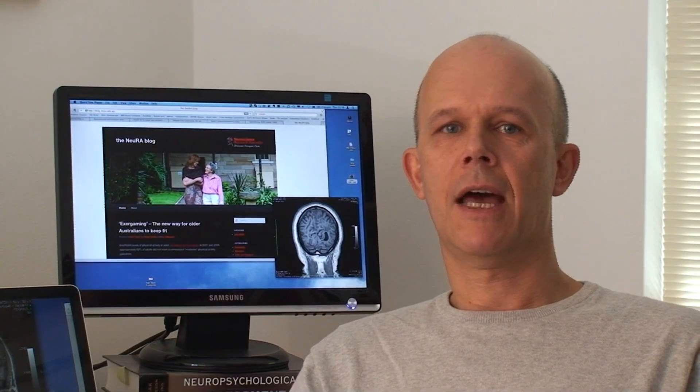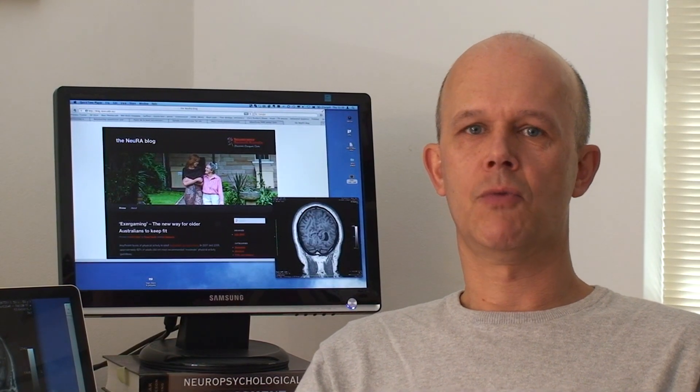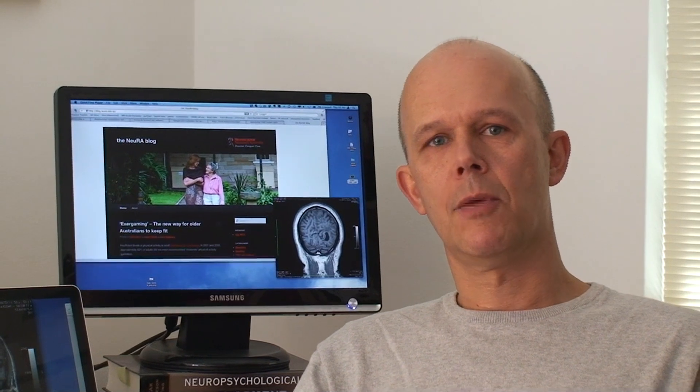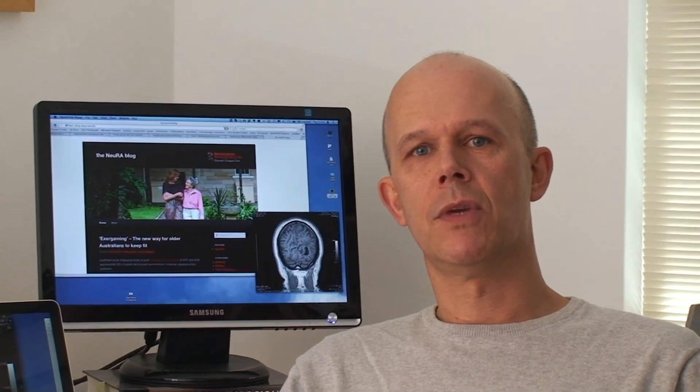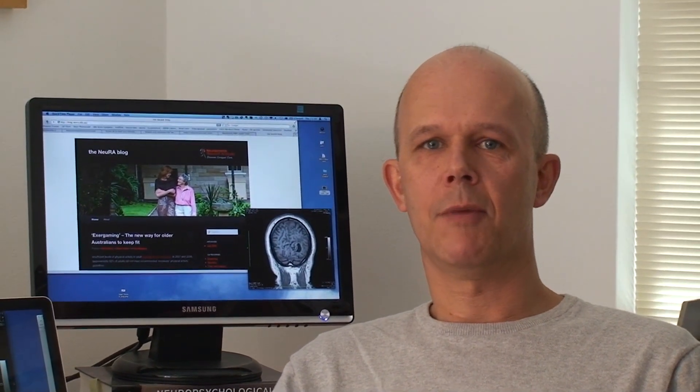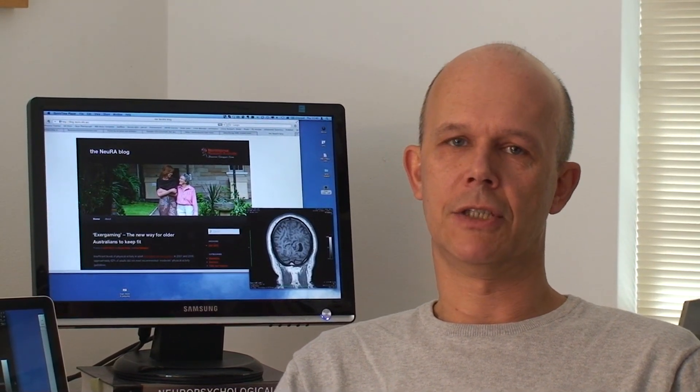This atrophy was confirmed in the second study in the post-mortem cohort where we found again this significant atrophy in the hypothalamus. It was predominantly in the posterior hypothalamus, which is the region of the hypothalamus involved in feeding regulation.